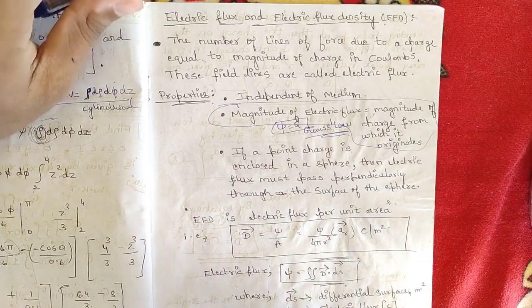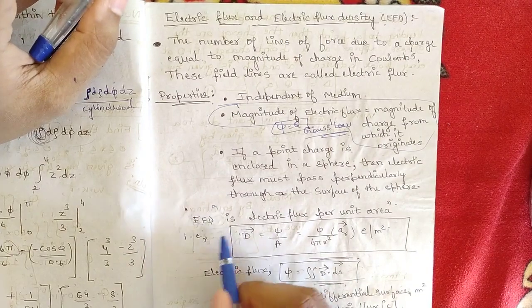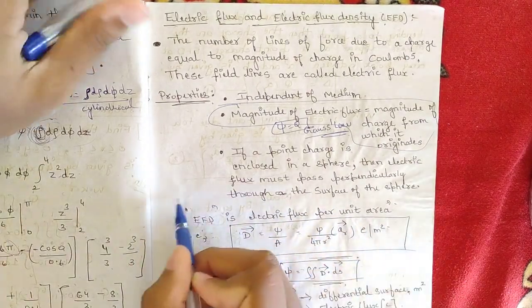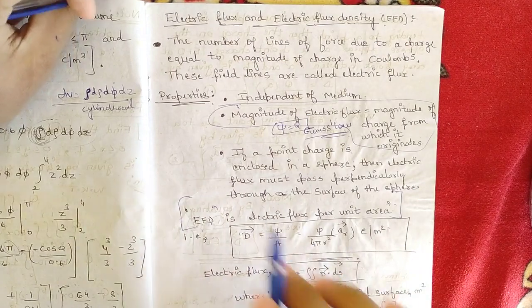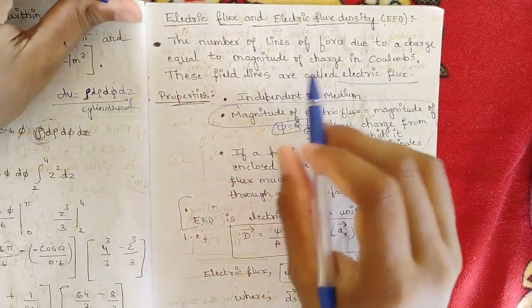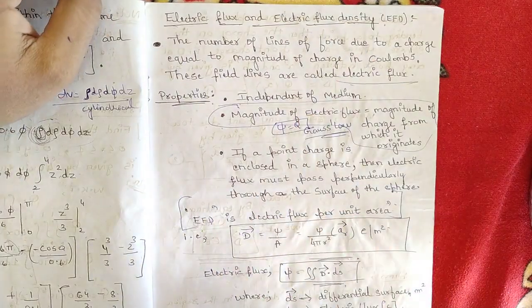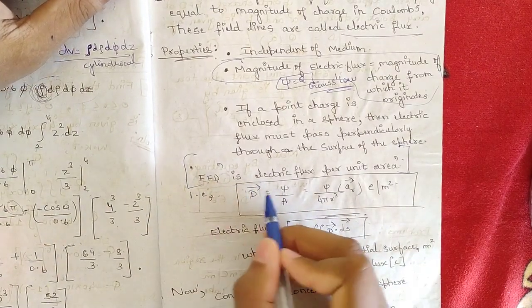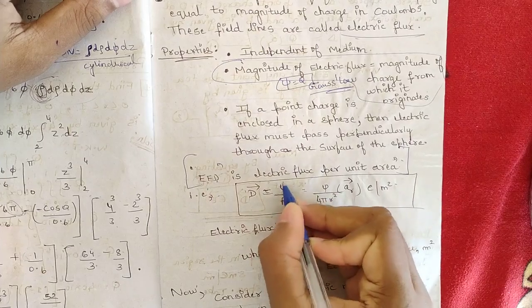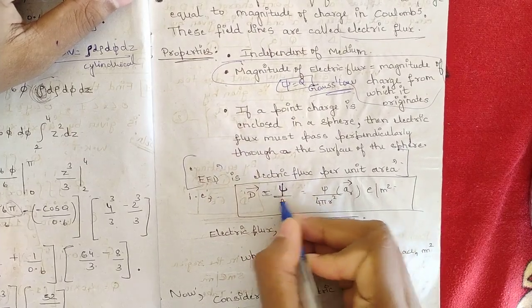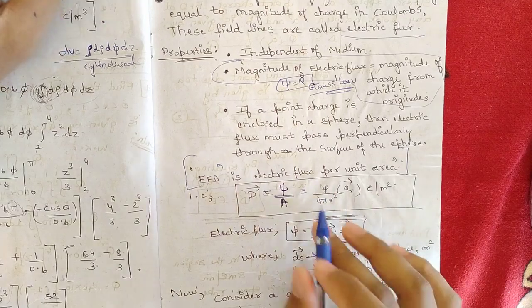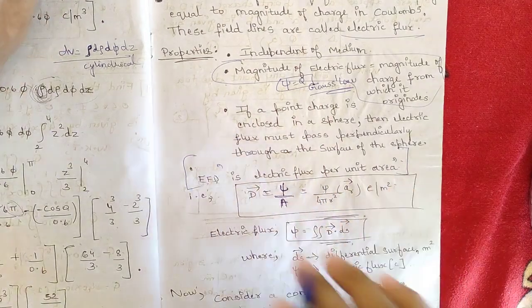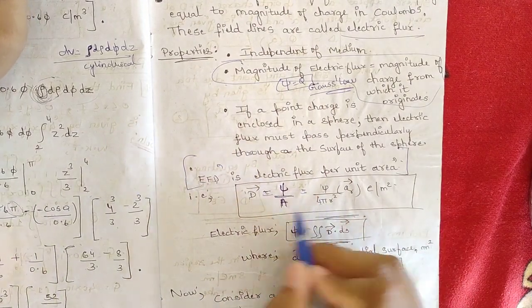Next, electric flux density (EFD) is defined as electric flux per unit area. I discussed the electric flux part first because only if you know electric flux can you write the relation for electric flux density. It is given by D vector equals psi divided by area A.